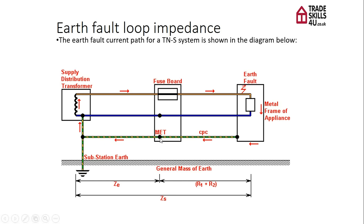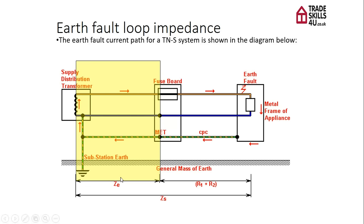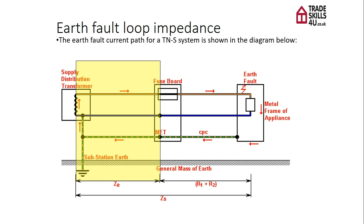In order to do that, we have to disconnect it to test it because we don't want to be testing any other conductors. We might be getting parallel paths if we don't disconnect it. The area that we're going to measure is this external section here, where we're measuring the incoming earthing conductor along with the incoming line conductor. And that is going to give us a value which is going to go on our certificate as ZE. This test has to be done at the origin of the installation with the main earthing conductor removed and the installation safely isolated.